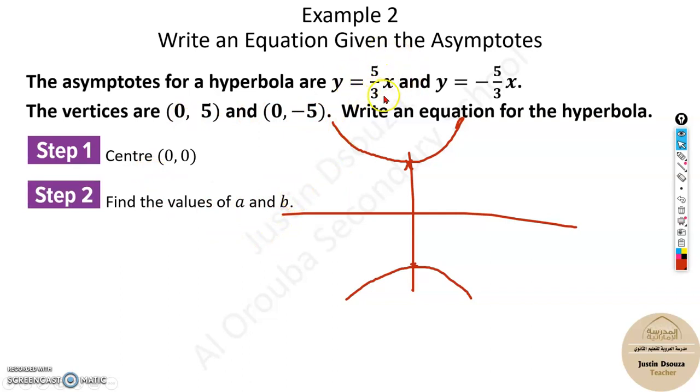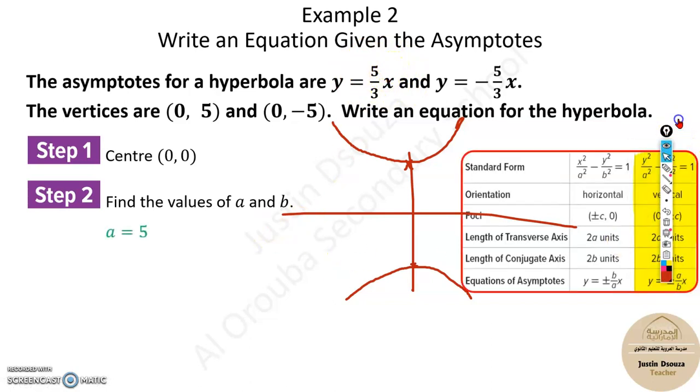You can easily find it from this particular asymptote value. The formula is ± a/bx. You know, a is 5, b is 3. The vertices is given, so we know the vertex is 5, so a is 5. That is simple. And the b value is 3.